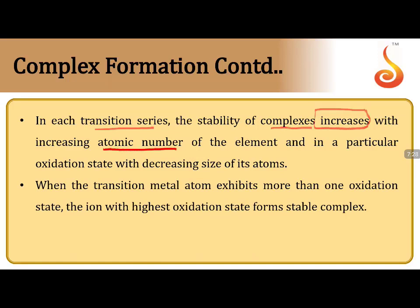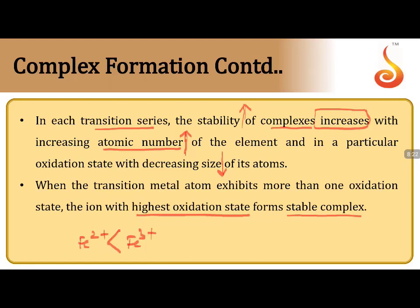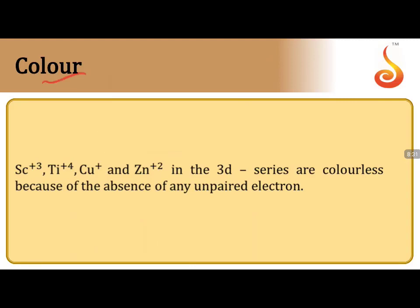Within each transition series, the stability of complexes increases with increasing atomic number. In a particular oxidation state, decreasing size means increasing stability. When two metal ions have the same oxidation state, the one with smaller size forms the more stable complex. When metals are in different oxidation states, the higher oxidation state forms the more stable complex — for example, Fe³⁺ forms a more stable complex than Fe²⁺.